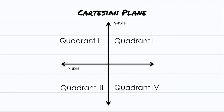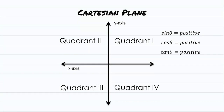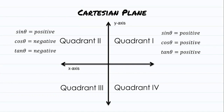Let us identify the sign of each trigonometric ratio in the given quadrant. In quadrant 1, sine theta is positive, cosine theta is also positive, and tangent theta is also positive. Therefore, in quadrant 1, all three circular functions are positive. For quadrant 2, sine theta is still positive, cosine theta is negative, and tangent theta is negative. Therefore, in quadrant 2, only sine theta is positive.